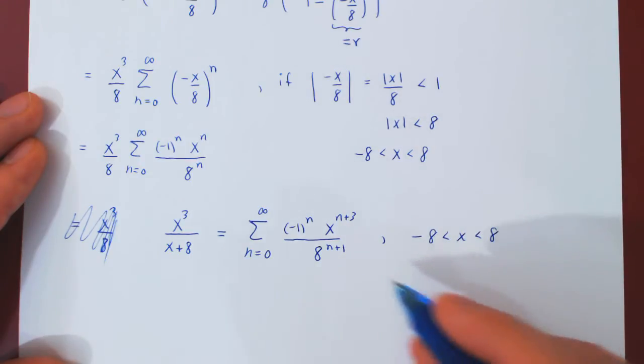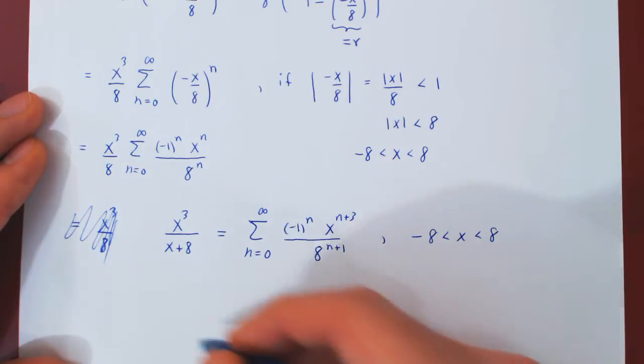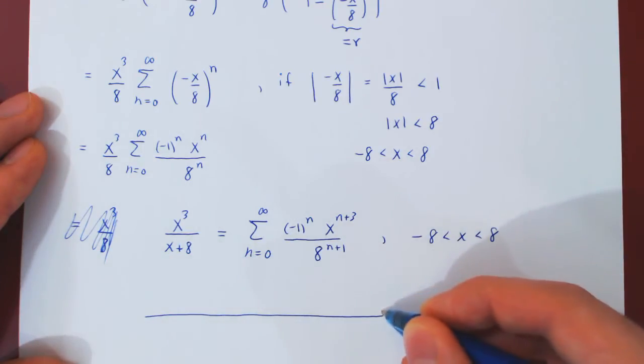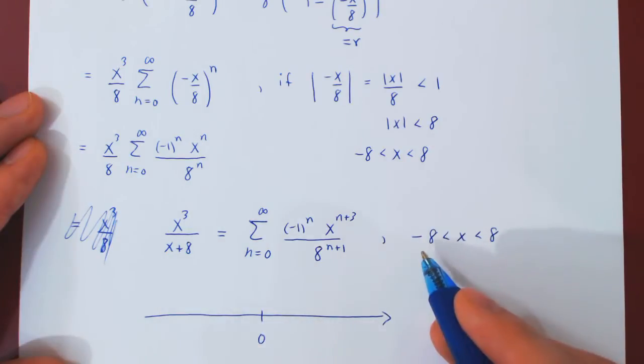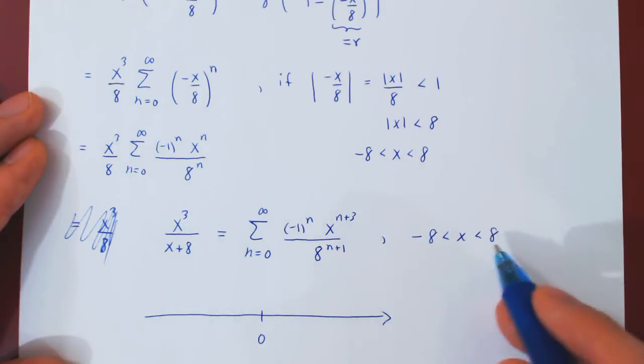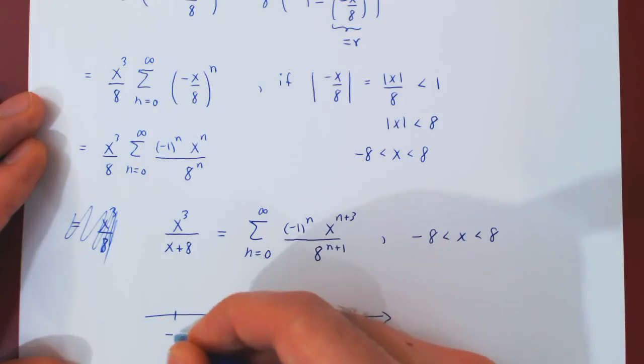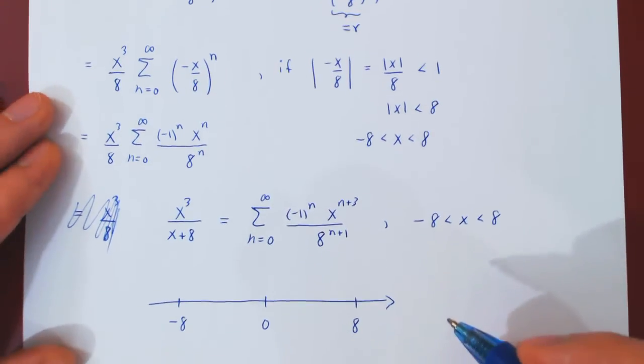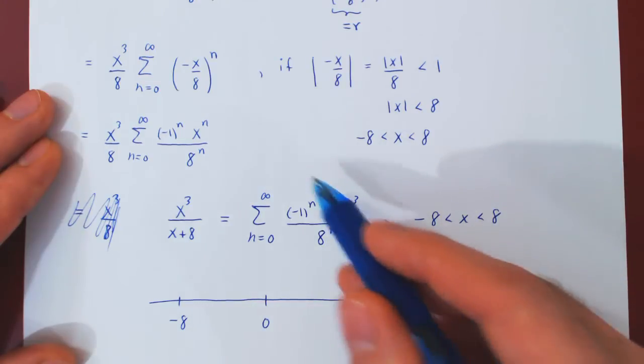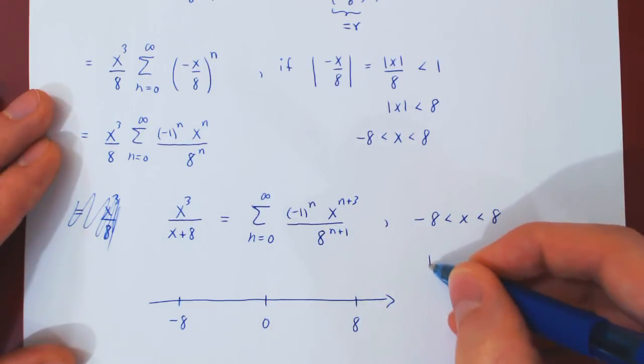And so if you visualize this onto the real line, the center of the expansion is 0, as we have found a Maclaurin series. And the interval of convergence goes from negative 8 to positive 8. And as an aside, we can mention that the Maclaurin series has 8 as its radius of convergence.